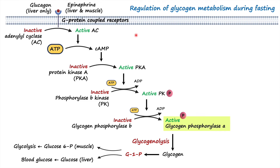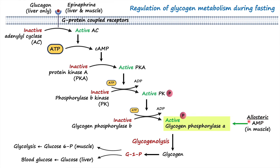Epinephrine and glucagon both act through G protein-coupled receptors to activate glycogenolysis. However, an important distinction is that glucagon only upregulates glycogenolysis in the liver, whereas epinephrine upregulates glycogenolysis both in liver and muscle. Glycogen phosphorylase is also allosterically regulated — increasing AMP levels, as an indicator of an energy-deficient cell, can allosterically activate glycogen phosphorylase to upregulate glycogenolysis and synthesize ATP through glycolysis.